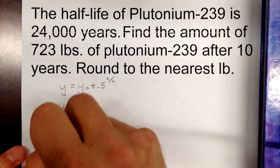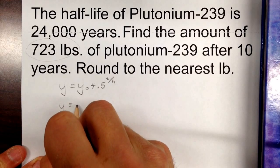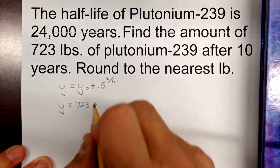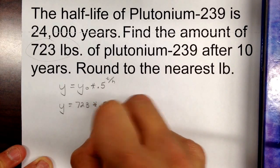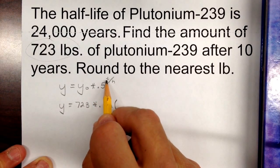So we'll start by saying that the future value, which we don't know, is the initial value, which is we have 723 pounds, and we're going to multiply that by the half, 0.5, and then we go carat, and that's our raising the exponent right there.